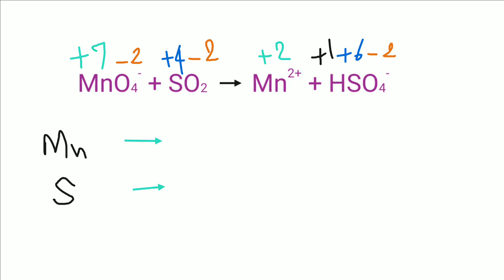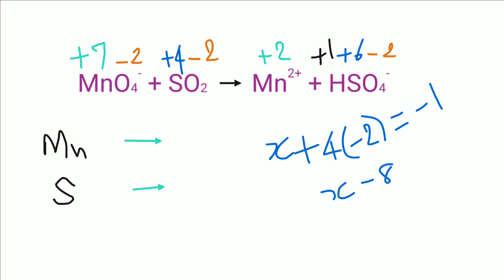I have noted down the oxidation numbers of all the atoms present in the equation. Let's work out the oxidation number of manganese in permanganate ion. Let's assume the oxidation number of manganese as X. In permanganate ion, 4 oxygen atoms are there, so 4 times minus 2. Oxygen has the oxidation number minus 2. This is a polyatomic ion, therefore the sum of the oxidation numbers equals its charge. Simplifying: X minus 8 equals minus 1, so X equals plus 7.